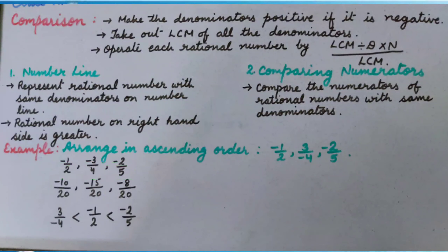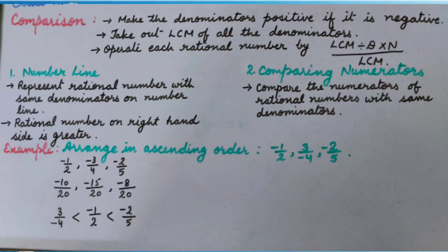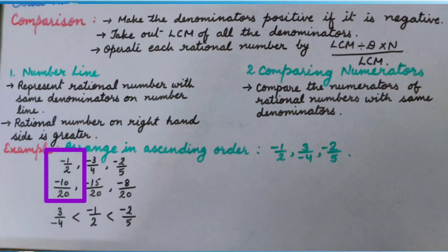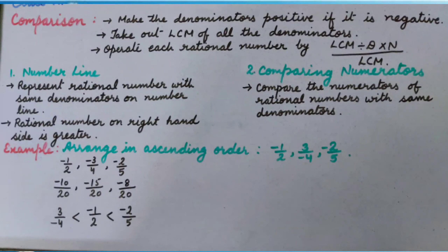As we can see, the denominators are not the same. So we will take out the LCM of 2, 4, and 5, which is 20. Then we will operate each rational number by LCM divided by denominator, multiplied by numerator, upon LCM. Hence, we get minus 10 upon 20 for minus 1 upon 2; minus 15 upon 20 for minus 3 upon 4; and minus 8 upon 20 for minus 2 upon 5.